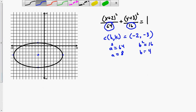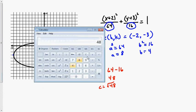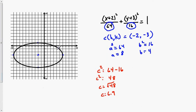Now we need to look at our foci. C squared is going to be a squared minus b squared: 64 minus 16 equals 48. So c equals the square root of 48, which is approximately 6.9. From our center, we go along the major axis 6.9 units in each direction. The two foci should be the same distance away from the center on either side.